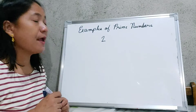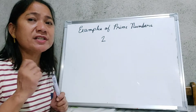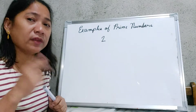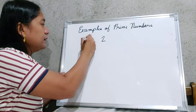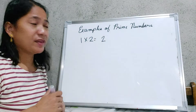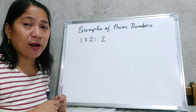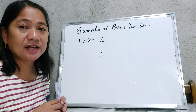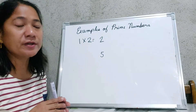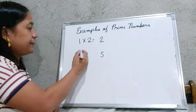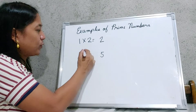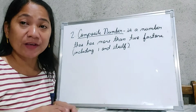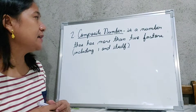Let's look at more examples of prime numbers. Number 2 is a prime number because there is no other number we can multiply to get 2 — the only option is 1 times 2 equals 2. Similarly, 5 is also a prime number because we cannot use any two numbers to get 5 aside from 1 and the number itself, so 1 times 5 equals 5.